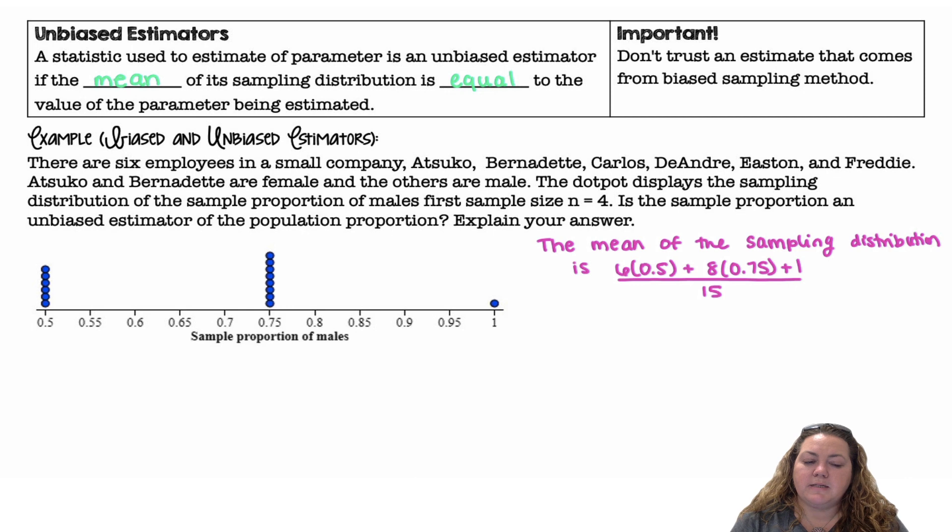Examples of biased and unbiased estimators. There are six employees in a small company. Here are their names. Atsuko and Bernadette are female and the others are male. The dot plot displays the sampling distribution of the sample proportions of males for sample size of n equals 4. Is the sample proportion an unbiased estimator of the population proportion? Explain your answer.